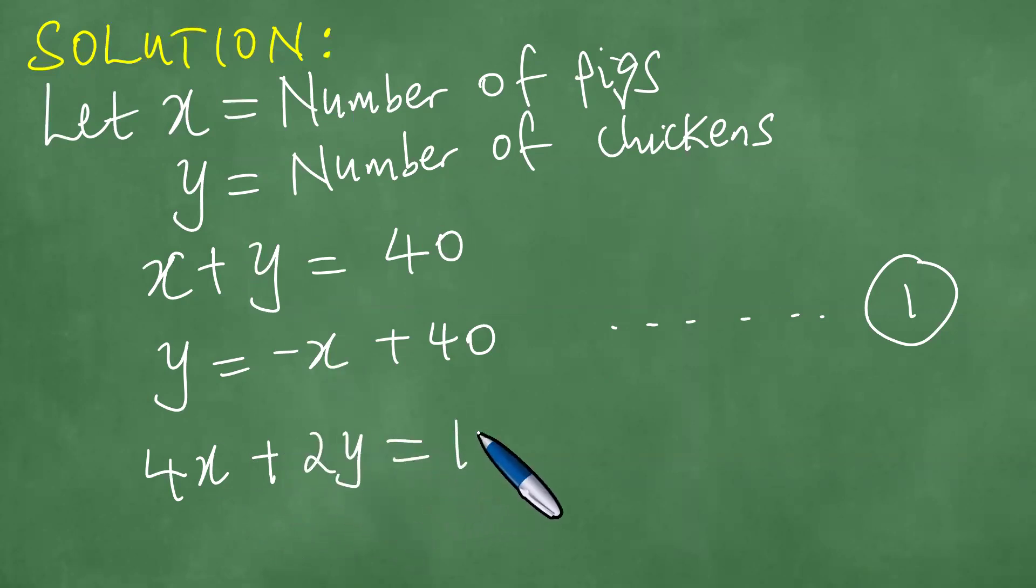So the total number of legs is 100. If one pig X has four legs then we have four times X, and a chicken has two legs then we have two times the number of chickens. And therefore it means that we have written 4X plus 2Y equals 100.